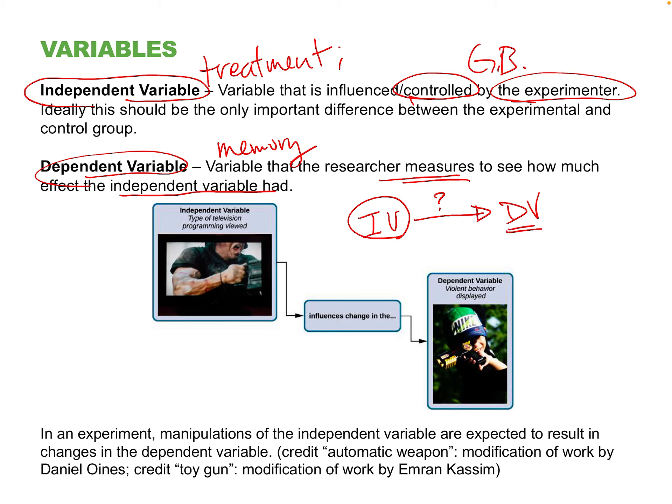If you remember that and refer to any experiment described to you — whether in a test question or a news article — the independent variable is always going to be the treatment. Whatever drug is being tested, or maybe it's a vaccine, and what is it trying to treat — blood sugar levels, memory — that's the dependent variable. That's how you label the two.